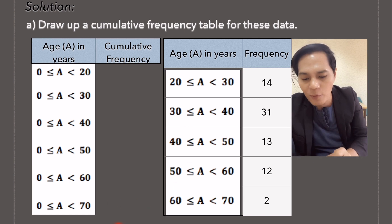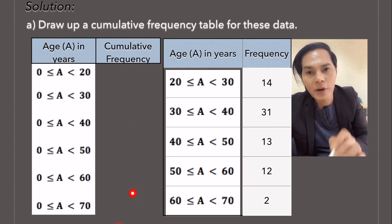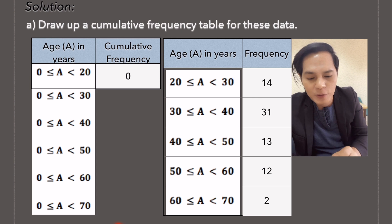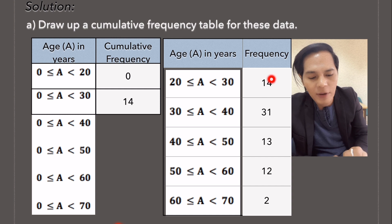Next one is, how are we going to obtain the cumulative frequency? Remember, cumulative frequency is the running total. So I'm starting here with 0 because we don't have any data from 0 to 20. Next one is 14 because here we have 14.